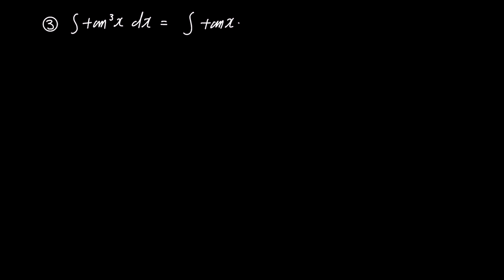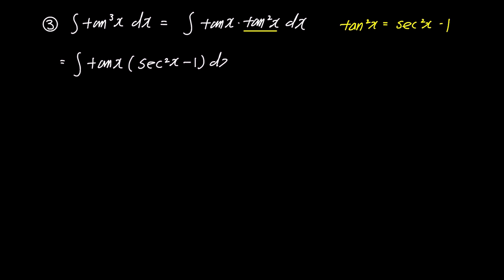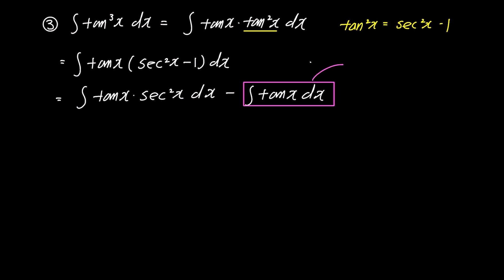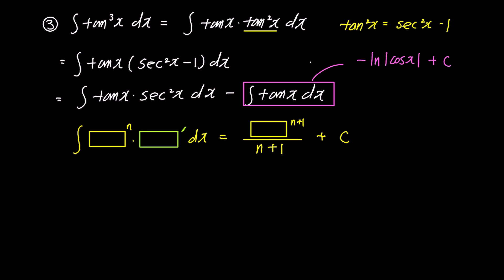Now let's move on to the third problem: the integral of tan³x dx. We factor tan³x into tan x times tan²x, and use the identity tan²x = sec²x - 1. The integral becomes the integral of tan x times (sec²x - 1) dx. Expanding the brackets, we have the integral of tan x · sec²x dx minus the integral of tan x dx. We found the result for the integral of tan x dx in the first problem: -ln|cos x| + c. Now let's revisit the box rule formula.